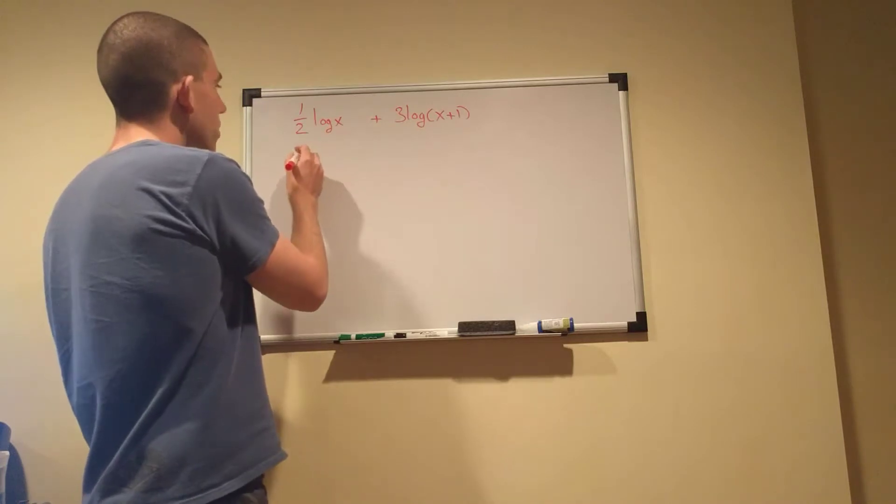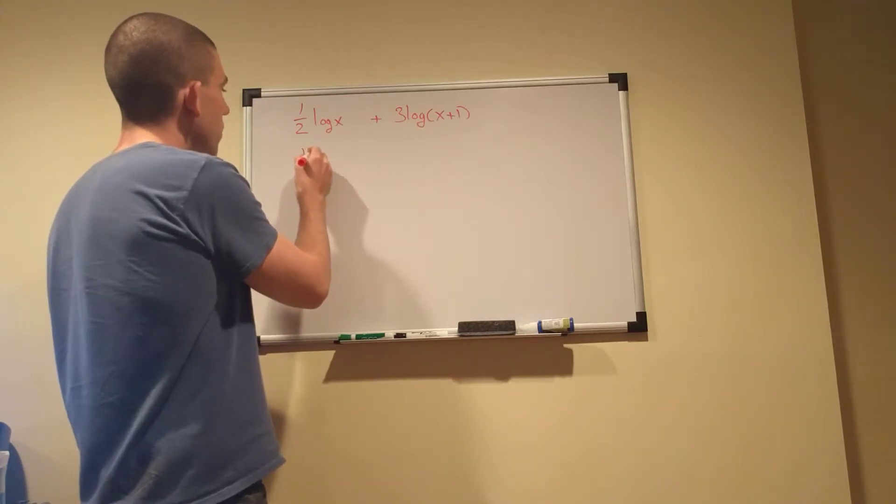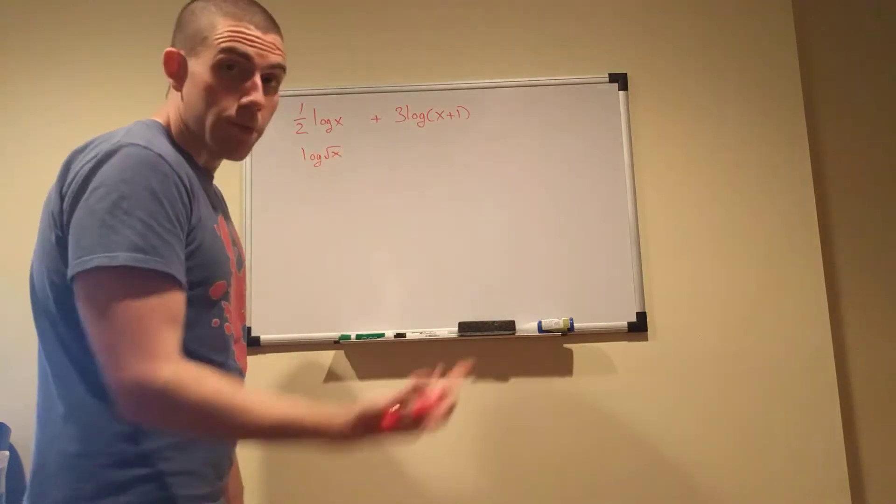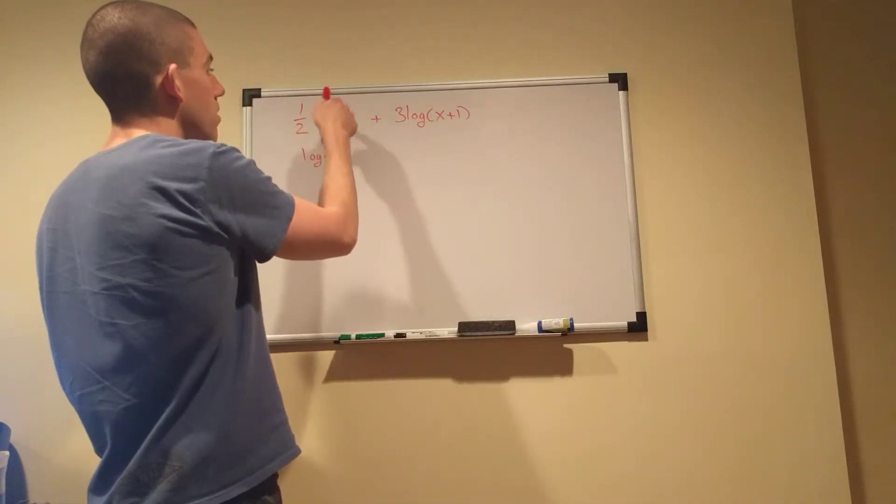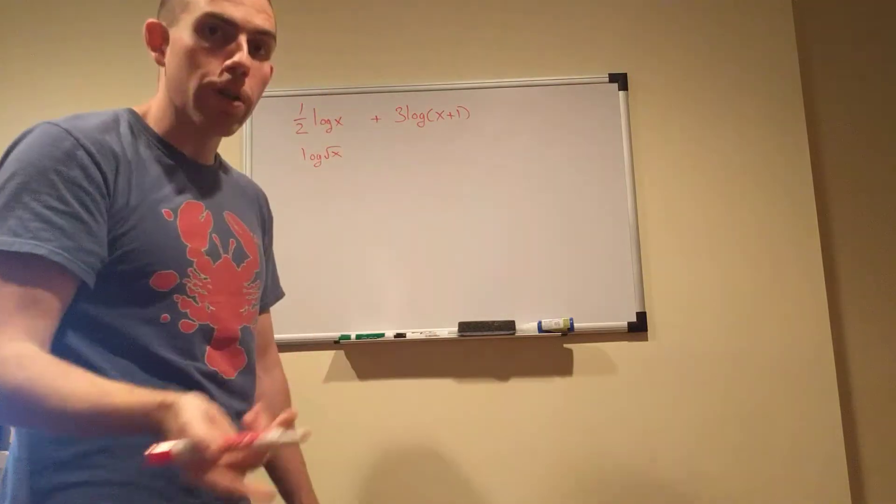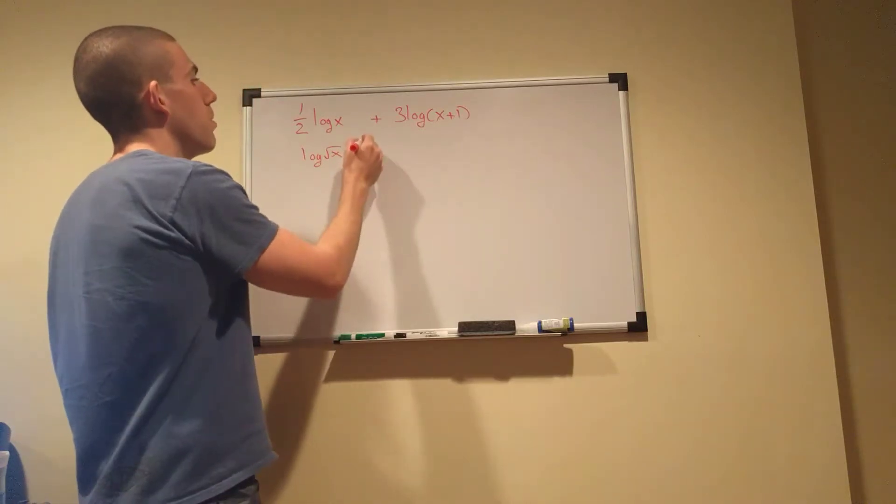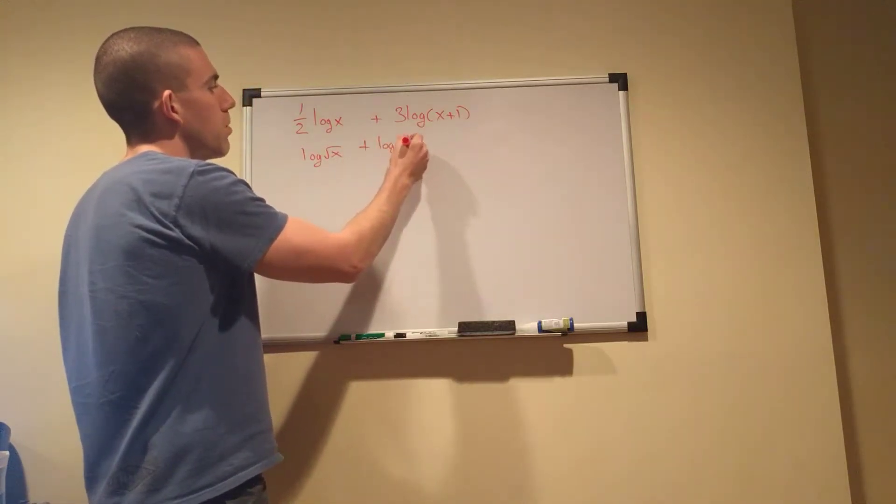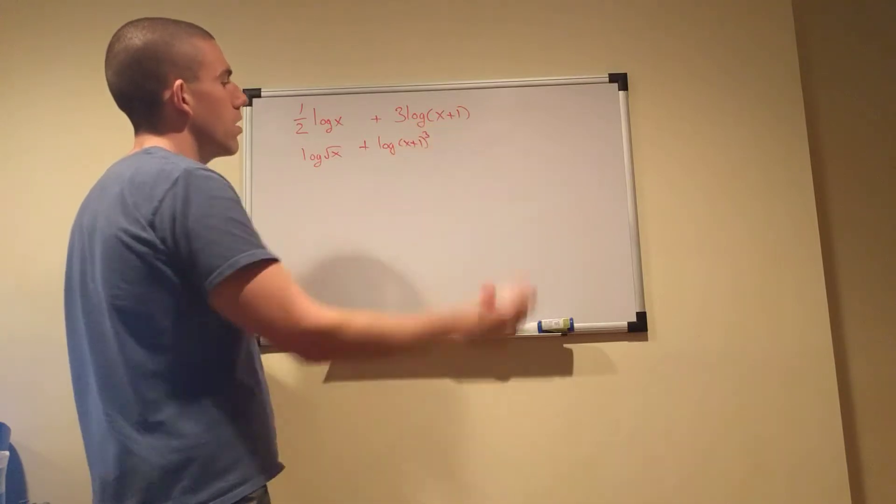What we'll do first is we'll do the reverse power rule. Because this comes up here, and we know that x to the one-half is equal to the square root of x, because we just talked about that, plus log x plus one to the third.